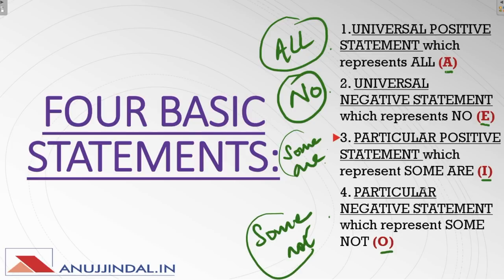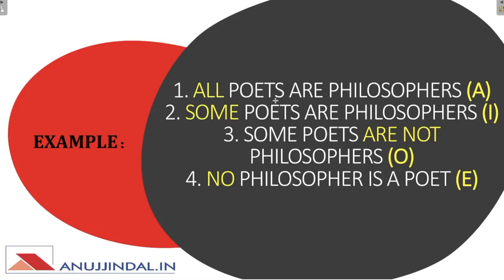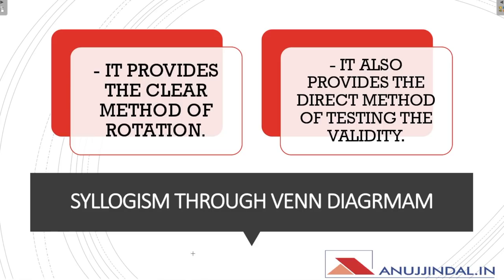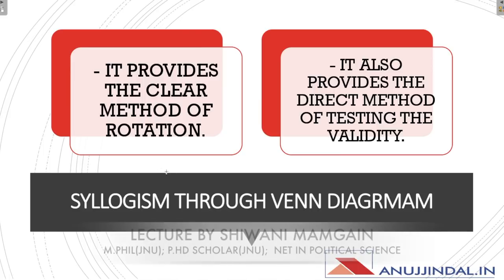We will see how these are used in part 2. So these A, E, I, O are the four symbols used for the four statements: A for 'all', E for 'no', I for 'some are', and O for 'some not'.